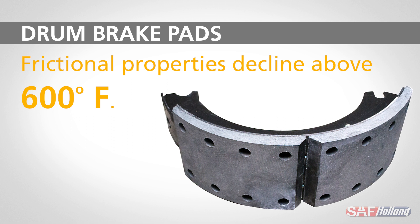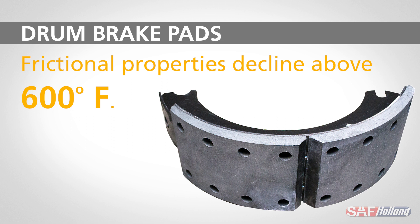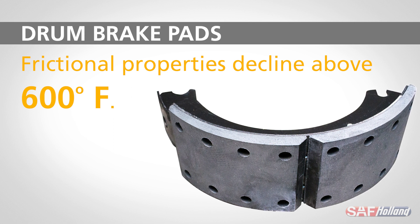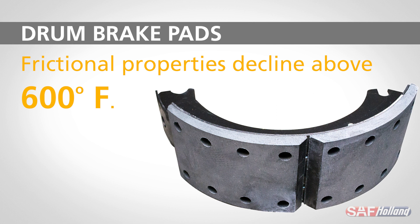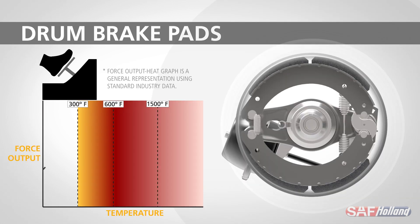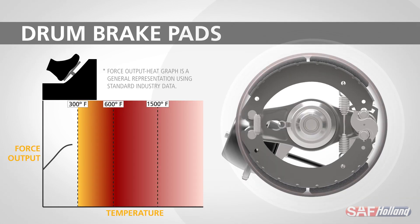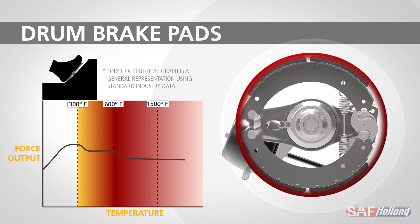Once that temperature threshold is reached, the resin in the brake pads actually begins to break down and glaze over, essentially causing the frictional surface of the brake pad to lose its friction properties. As the resin-based pads hit 600 degrees, their frictional properties begin to fall off dramatically, leading to more pronounced brake fade in the drum brake system.